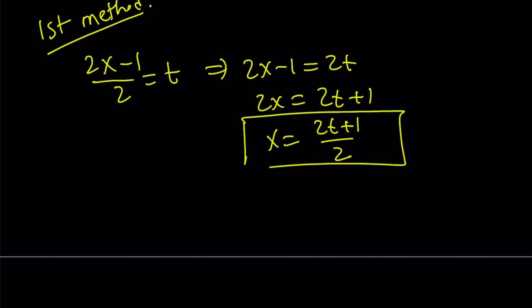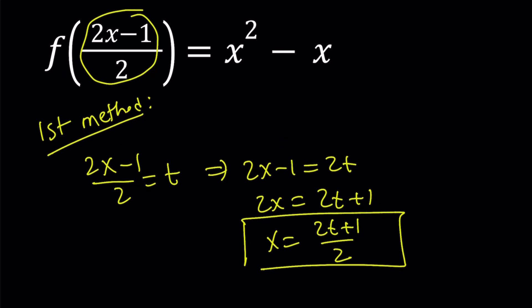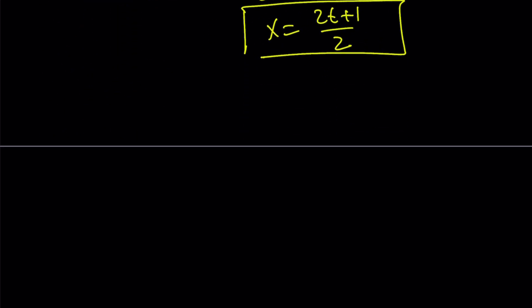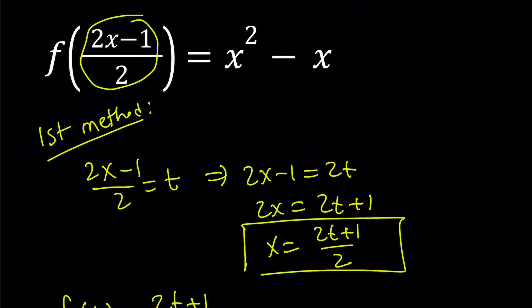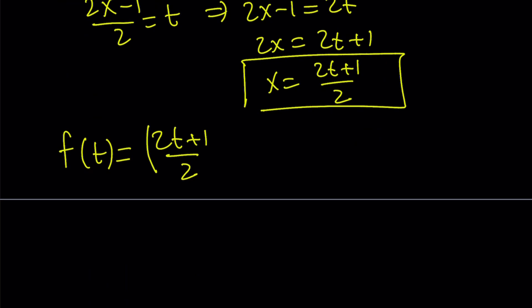So I'm going to go ahead and substitute that on the right hand side as well. And here's what I get. f of t equals 2t plus 1 over 2, which replaces x by the way, and that'll be squared. And from that, I'll just subtract the same thing.